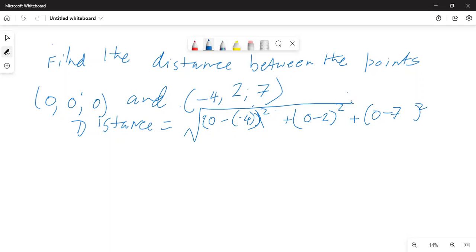Everything under the square root. So this is equal to square root of minus 4 and minus 4 is positive 4 squared plus minus 2 squared plus minus 7 squared.